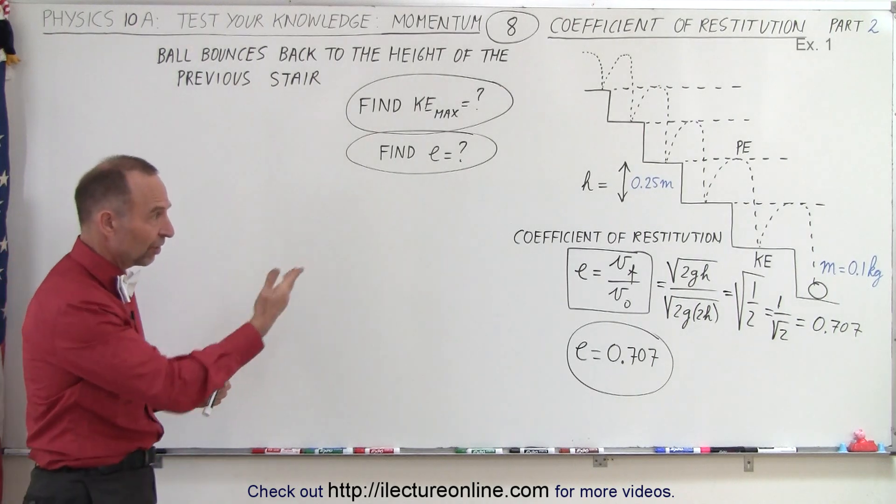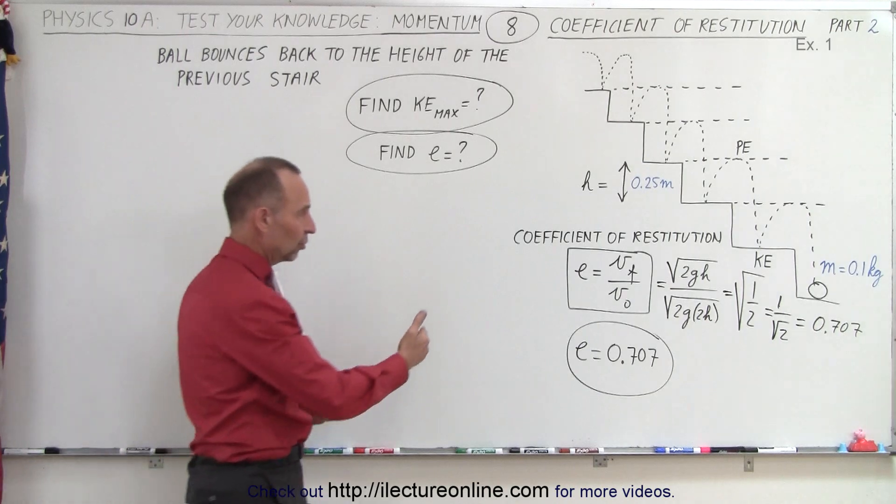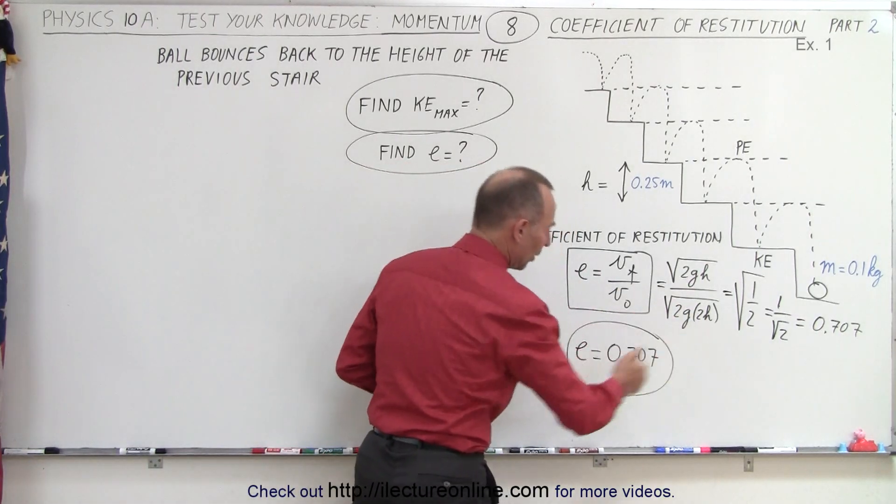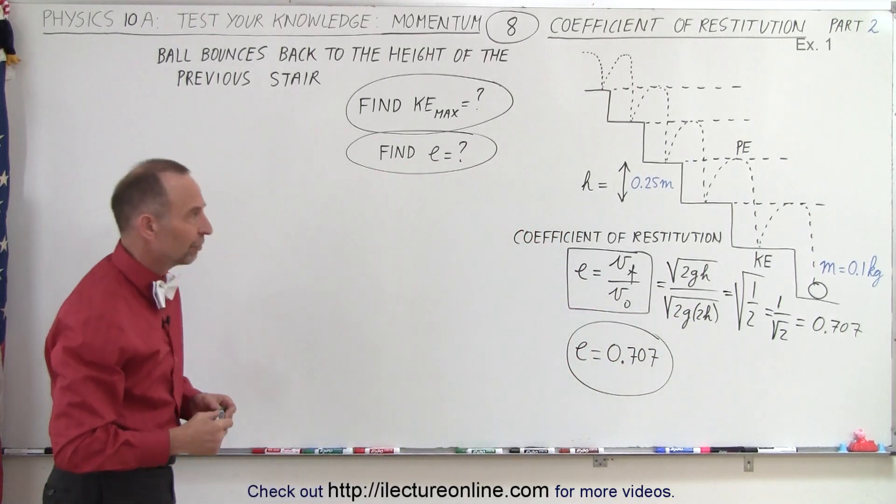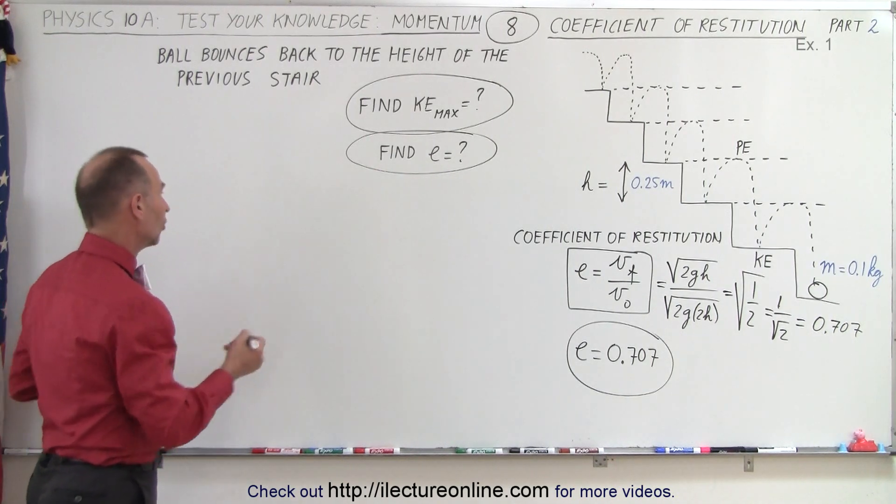With some subtle differences. So let's do the same problem that we did last time, and again, the coefficient of restitution makes no difference what units we use. We already know how to find that, but let's find the maximum kinetic energy, which is equal to the maximum potential energy.